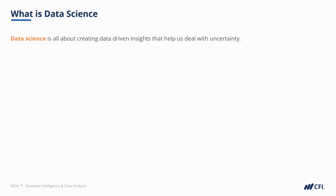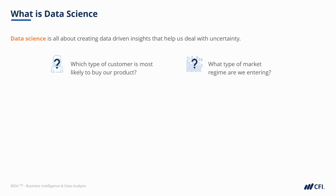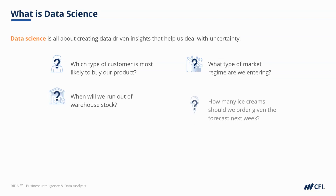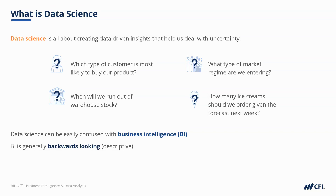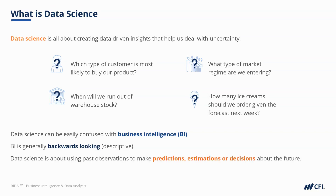Data science is all about creating data-driven insights that help us deal with uncertainty. Insights might be predictions, estimations or decisions that help answer a wide range of questions — like which type of customer is most likely to buy our product, what type of market regime are we entering, or when will we run out of warehouse stock. These questions sound very similar to business intelligence, but BI is generally backward-looking and descriptive, whereas data science uses past observations to make predictions or estimations about scenarios that present us with uncertainty.